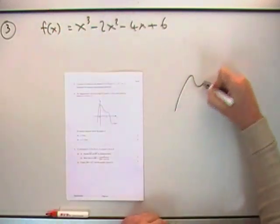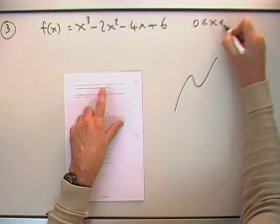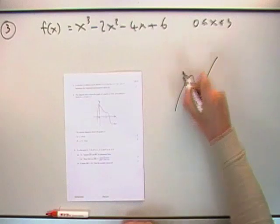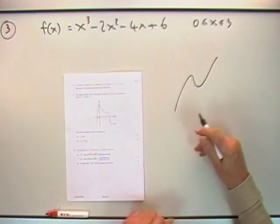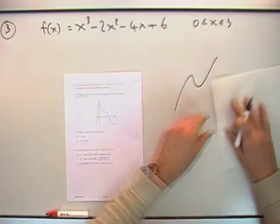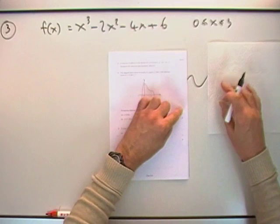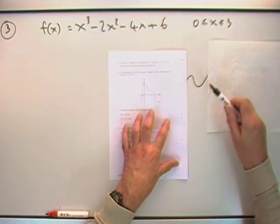Because what you have here is this function which is obviously a positive cubic that looks like this, but there's a restricted domain. You're only considering the part of it between 0 and 3, wherever they happen to be. I'm not sure where these turning points are yet until I work them out. It could well be for instance that 0's here and 3's there.